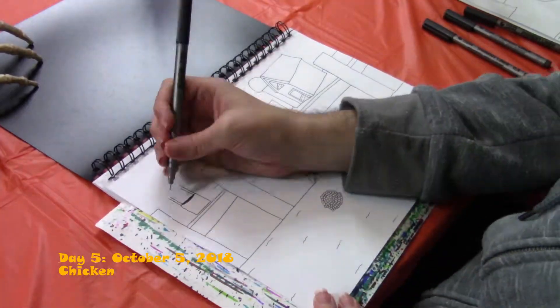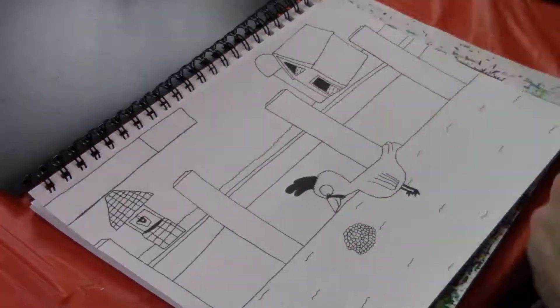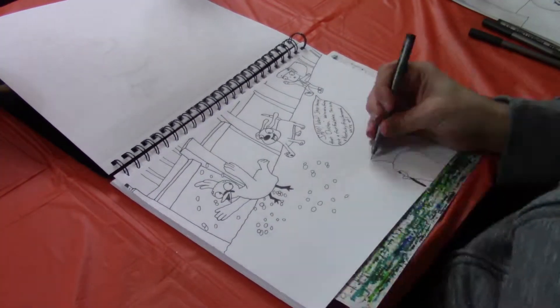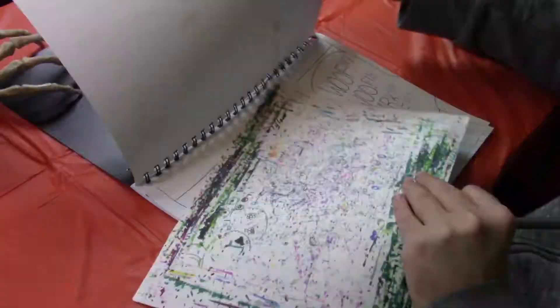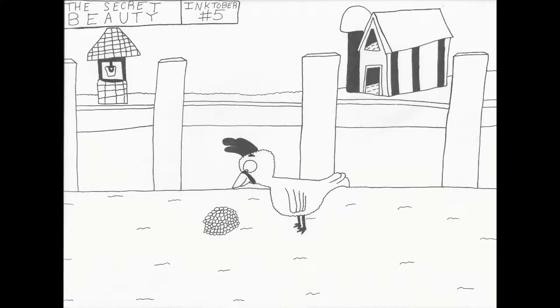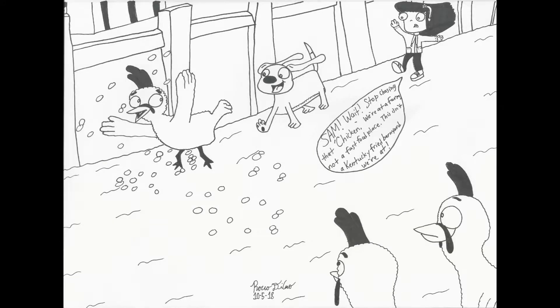Now, this comic uses the prompt word chicken. So, I created a scene of River at a farm, and Sam decides to chase after a chicken because, well, he's hungry. Anyway, this comic is three panels long. Woof! Woof! Woof! Arf! Arf! Arf! Arf! Arf! Sam! Wait! Stop chasing that chicken! We're at a farm, not a fast food place! This isn't a Kentucky Fried Barnyard we're at!